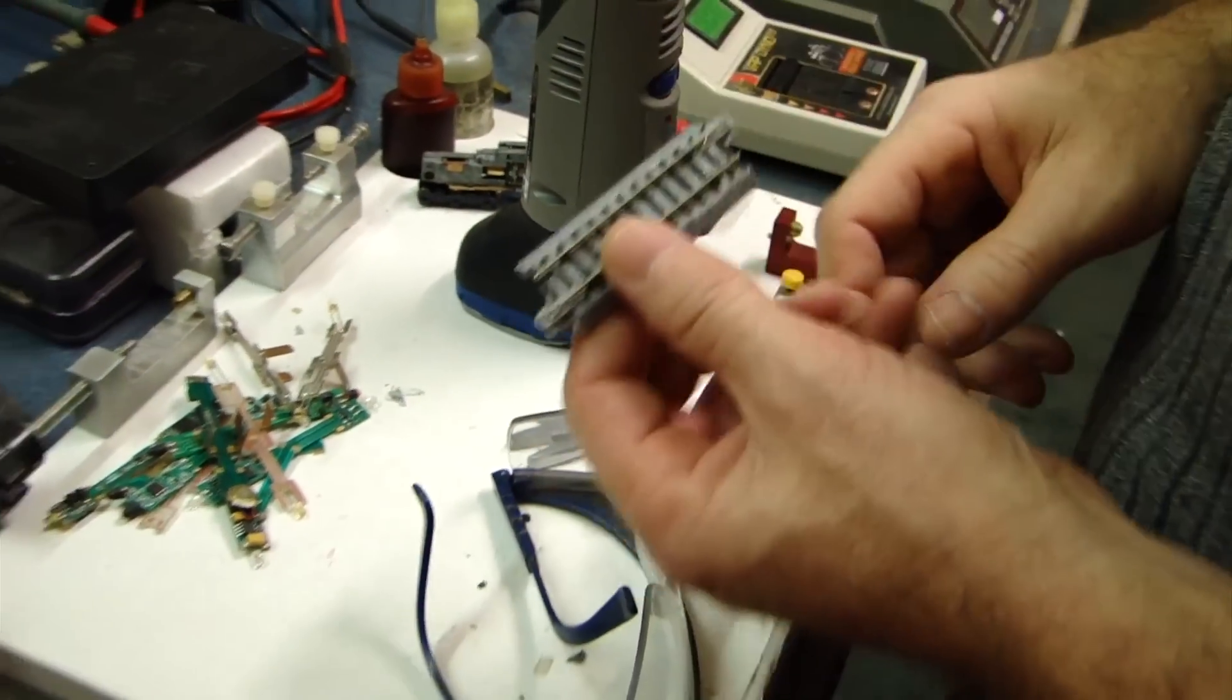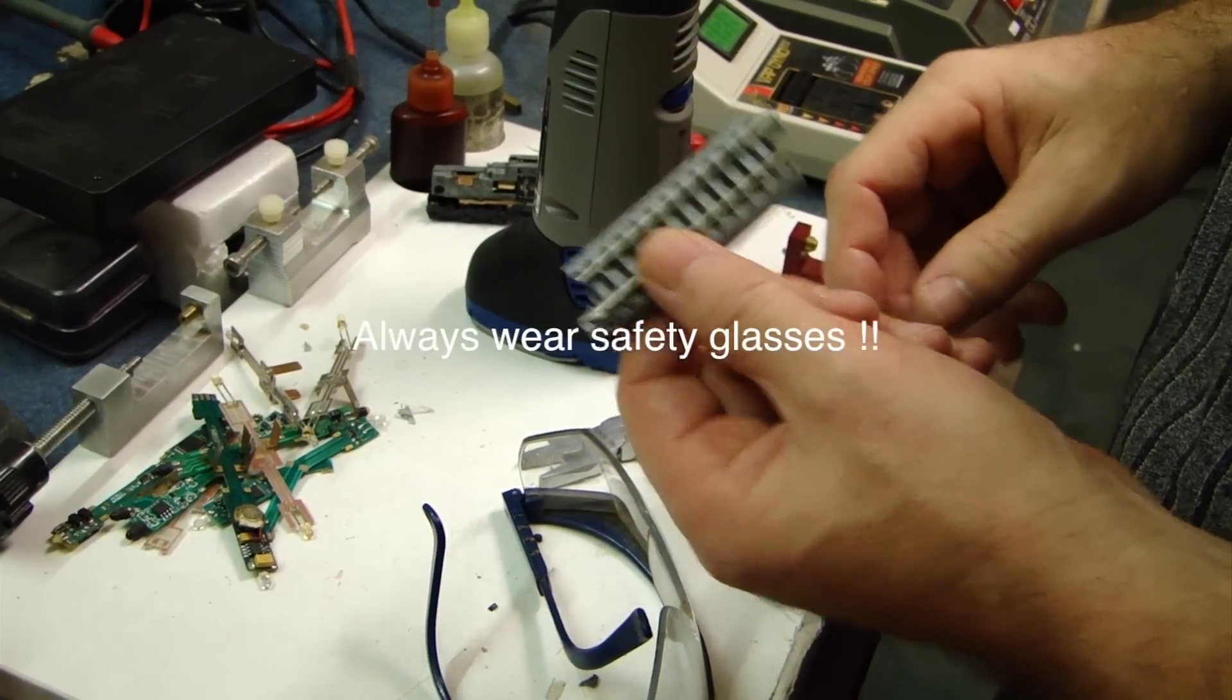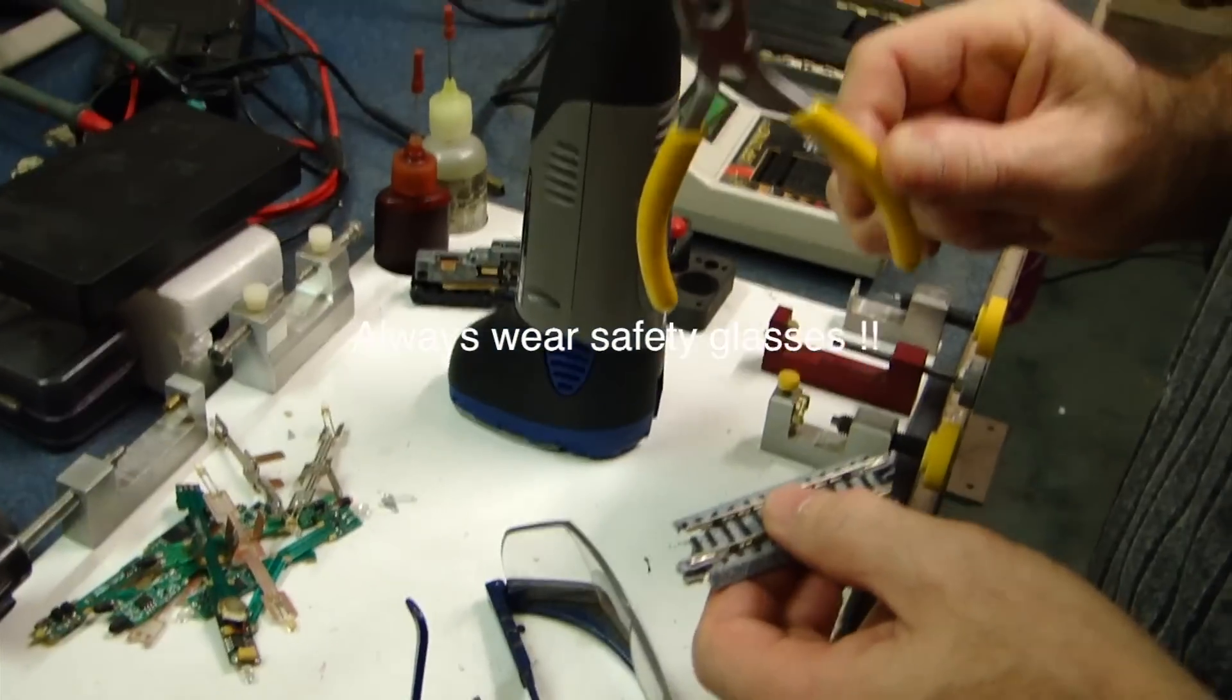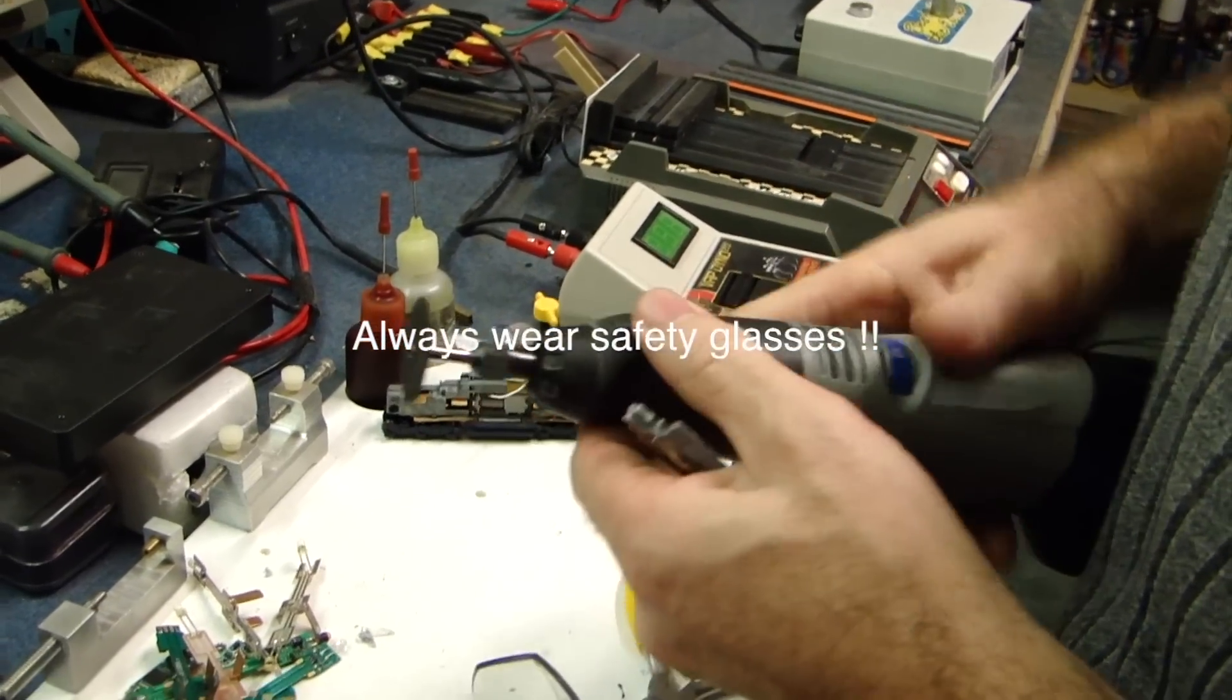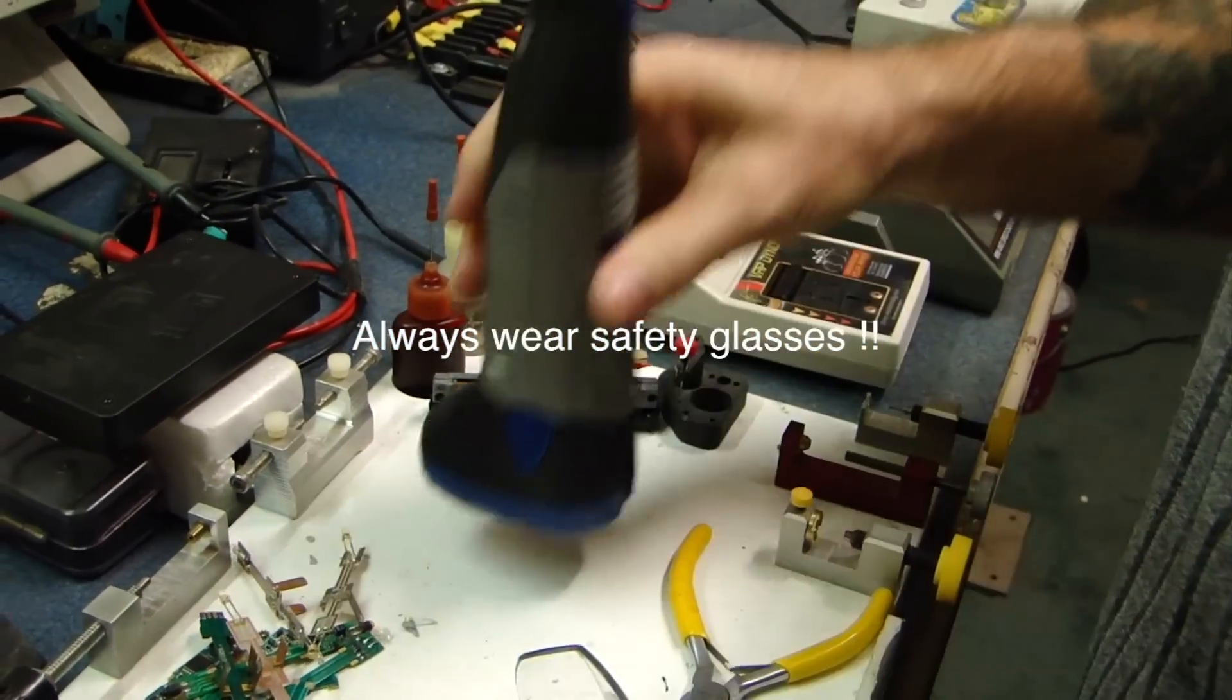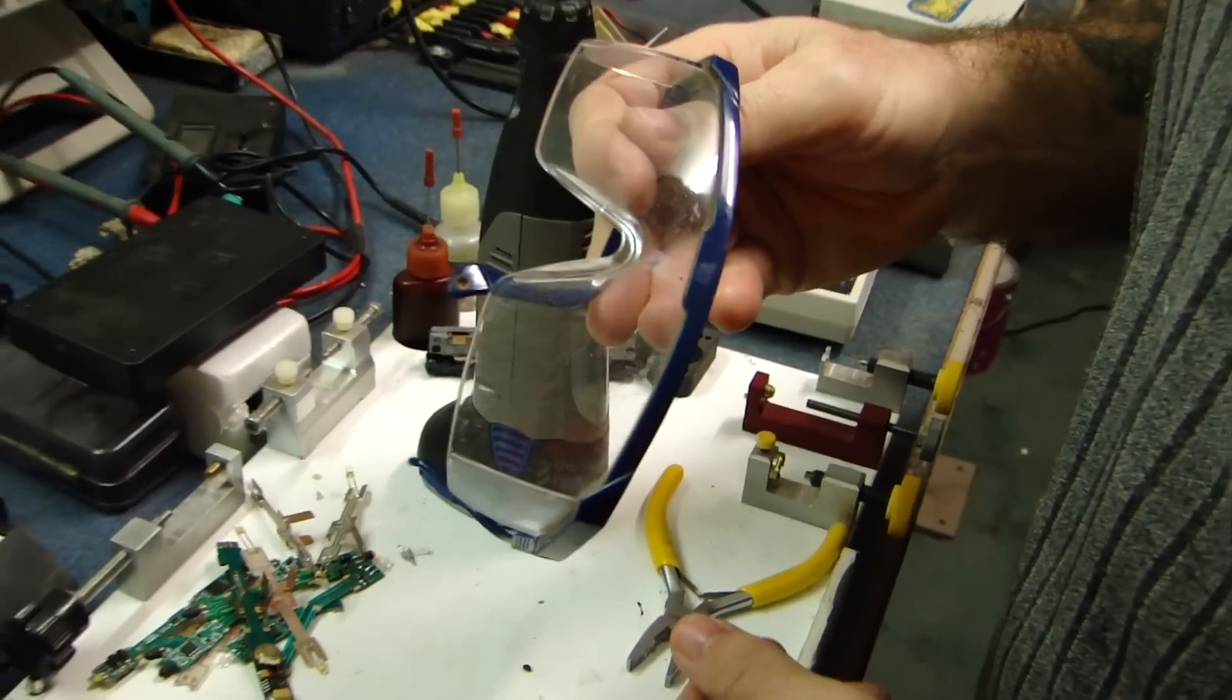So what you're going to need of course is your piece of Kato Unitrack, a pair of pliers, your Dremel tool with your cutting disc on the top and of course safety glasses.